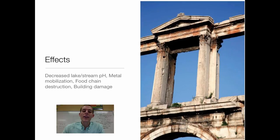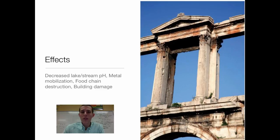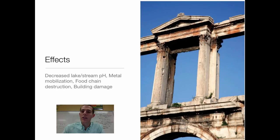Finally, acid rain damages building materials, especially things built out of limestone. Old monuments and old buildings — if they've got acid rain falling on them over time, that limestone will start to dissolve and get pitted. Right there is a picture of one of these structures in ancient Greece, and you can see how over time it has become eroded and pitted as acid rain has fallen on it. Acid rain could also ruin the finish on cars and the paint on houses.